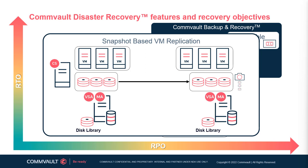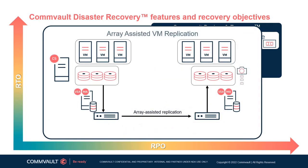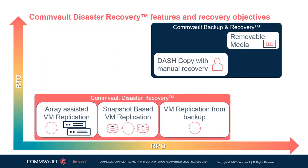The target RPO for snapshot-based VM replication is between 15 minutes and 4 hours, although this will vary depending on the environment. The final replication mode is array-assisted remote replication, which improves data availability through mirroring of volumes between two sites. This mode offers continuous replication for workloads with near-zero RPO requirements. Requirements and options for VM replication depend on both the data replication mode and hypervisor type; please consult the Commvault documentation website for hypervisor-specific requirements.